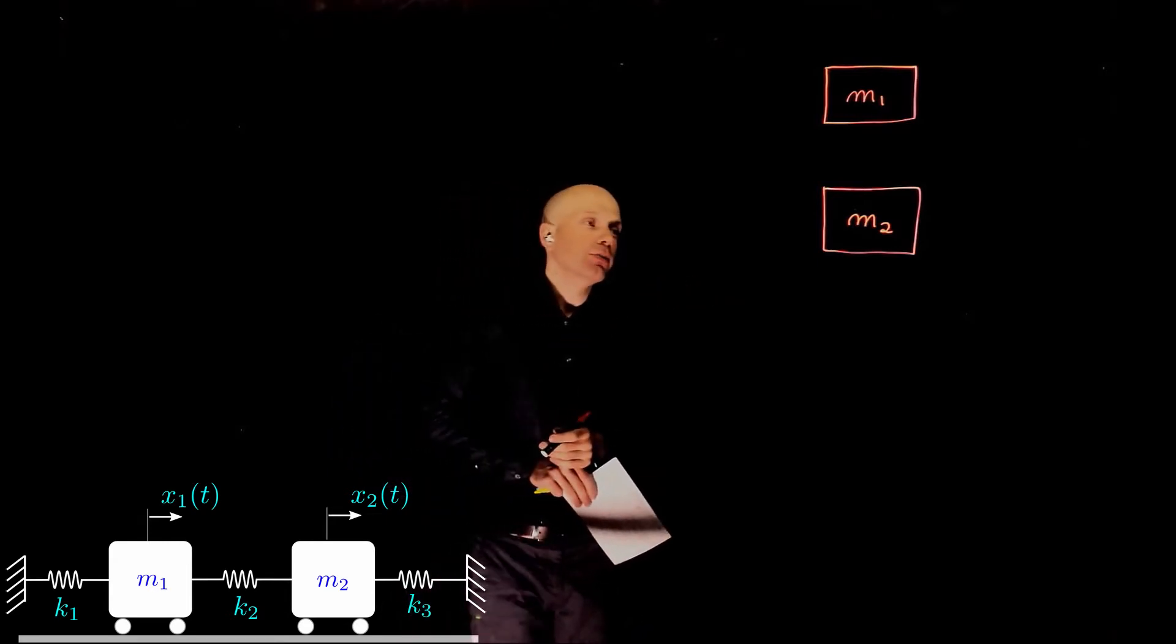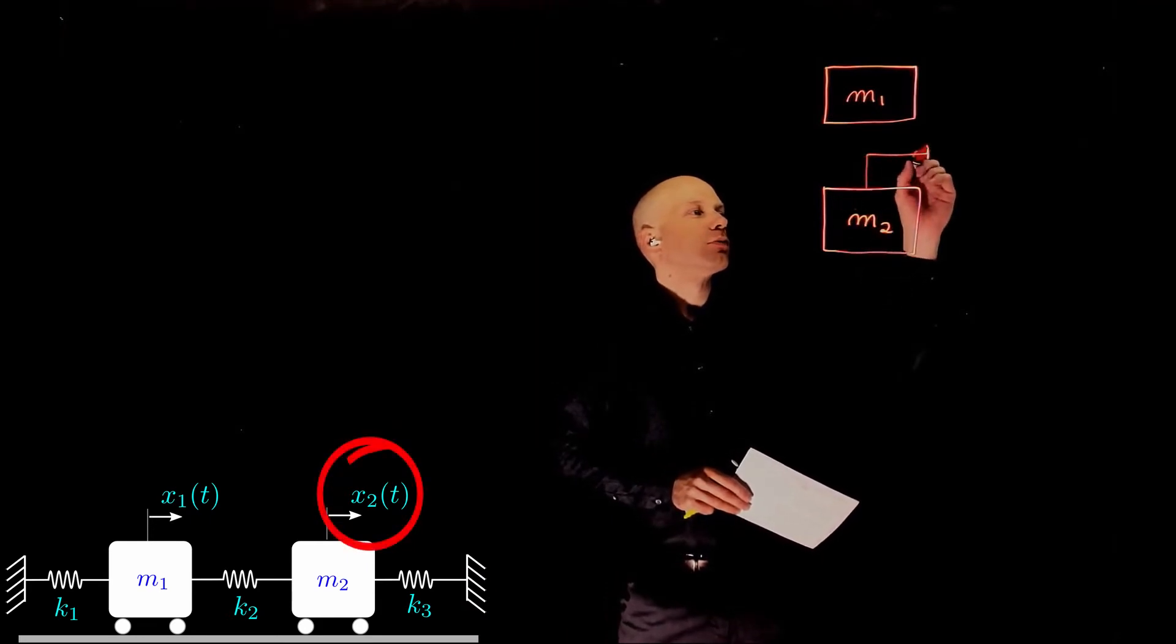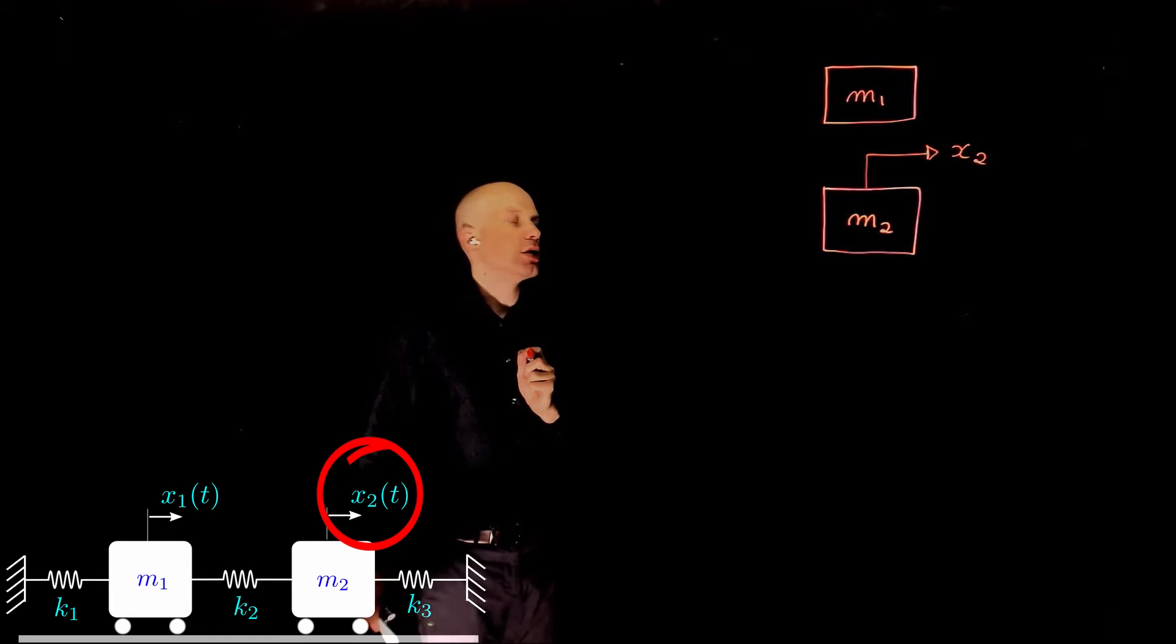For instance, we could give m2 a displacement, x2, and assume that this is the input to the system.